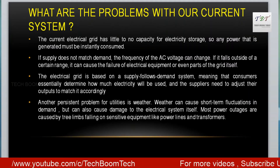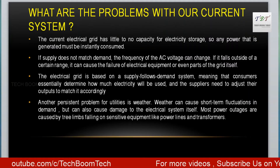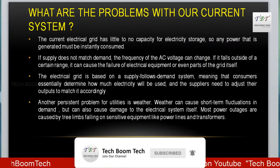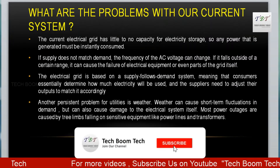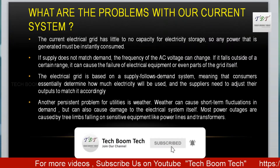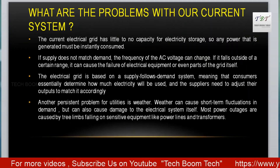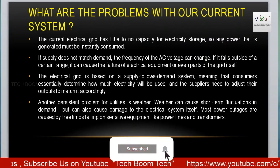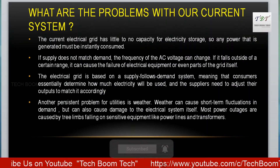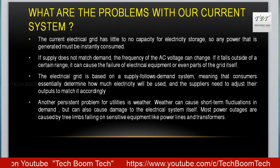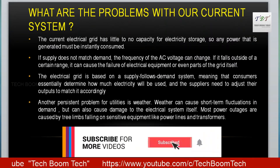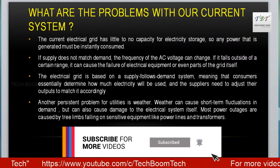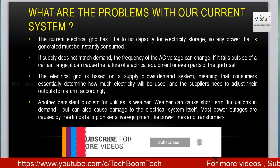Another issue is weather. Weather can cause short-term fluctuations in demand — for example, on a hot day we use air conditioning more, while in a snowstorm we use heating systems. Weather changes can also cause damage to the electrical system. Most power outages are caused by debris falling on sensitive equipment like power lines and transformers, as you might have experienced in your daily life.